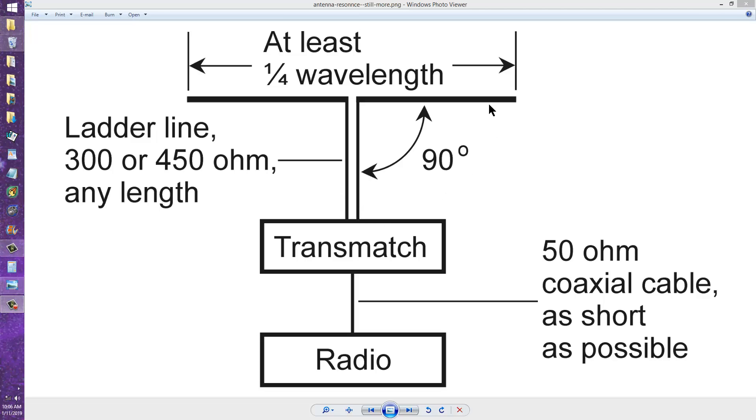You don't have to have anything resembling resonance at all beyond the transmatch, as long as the transmatch can be tuned to get a 1 to 1 standing wave ratio at the radio, assuming that the radio is designed for 50 ohms unbalanced output. Then you have a resonant system.